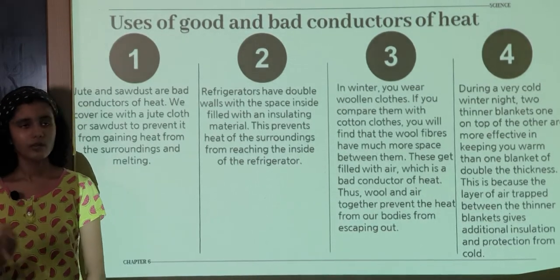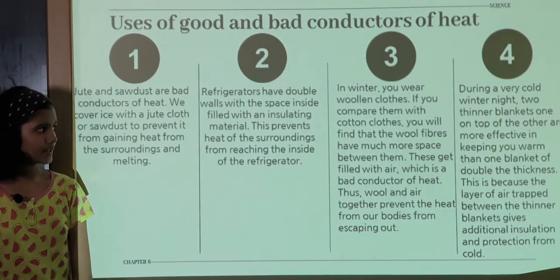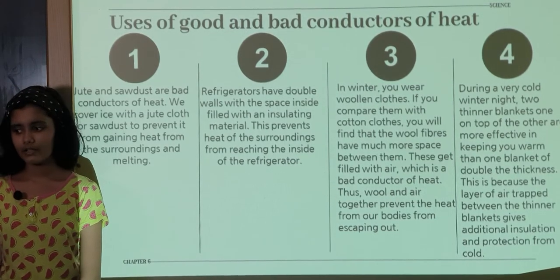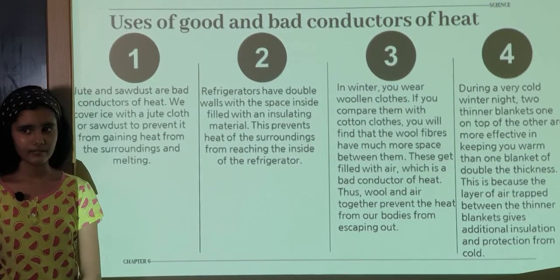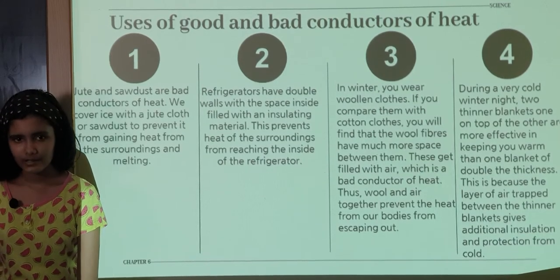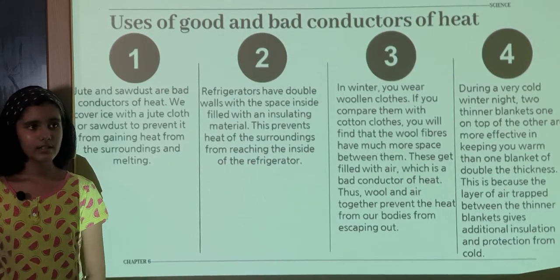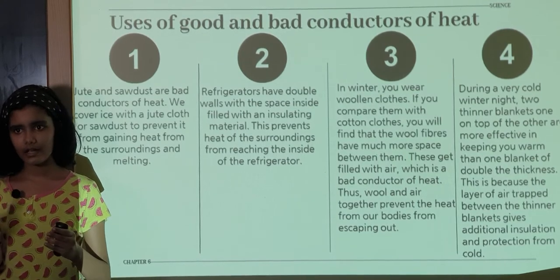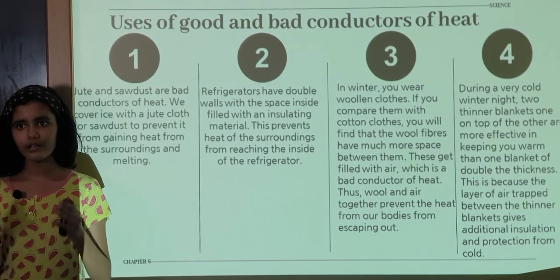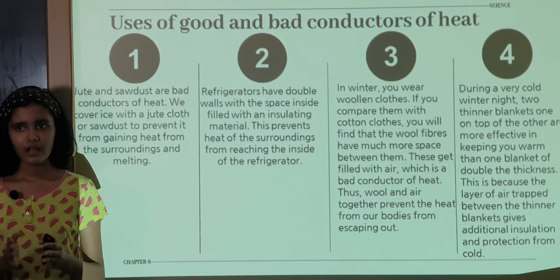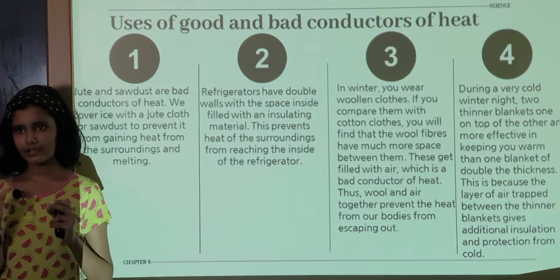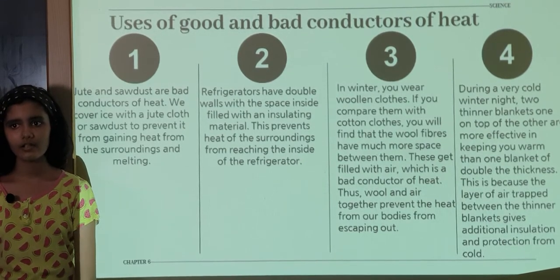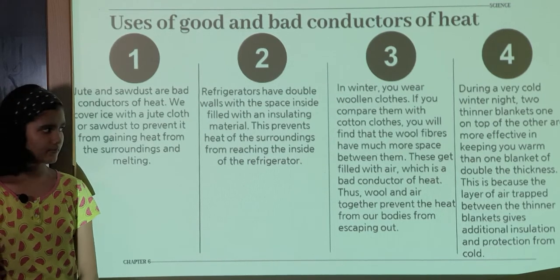During a very cold winter night, two thinner blankets are more effective than one blanket of double the thickness. This is because the two thinner blankets have a layer of air trapped between them. This air is a bad conductor of heat and keeps us warm on cold nights.